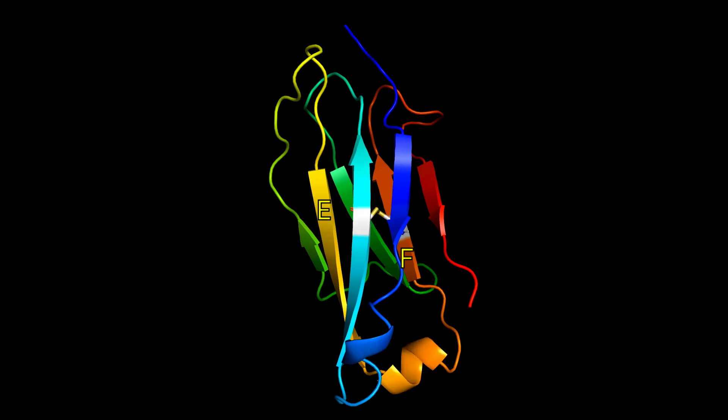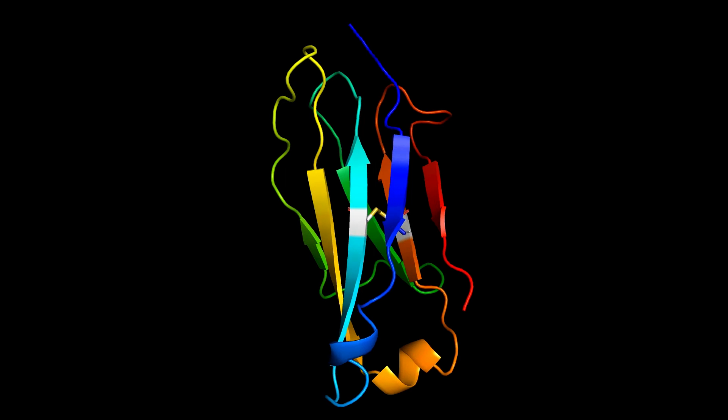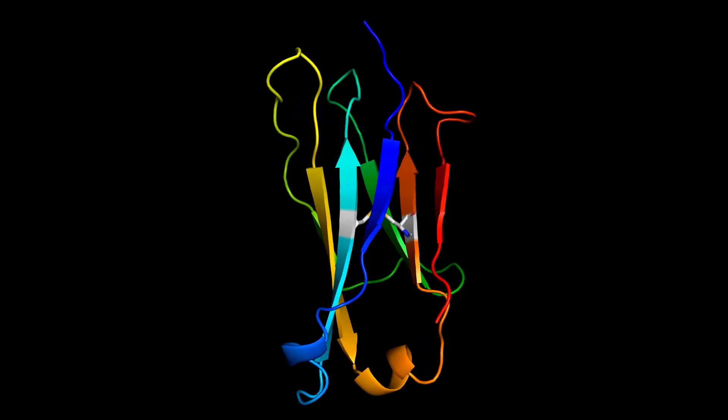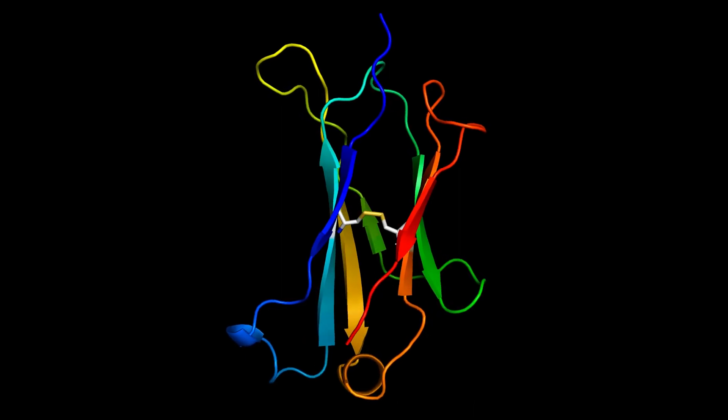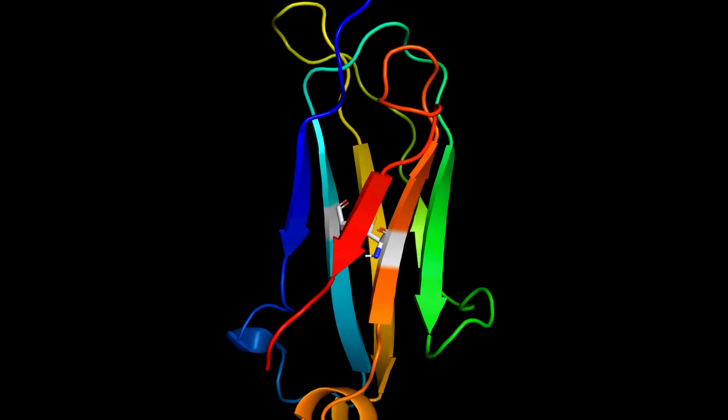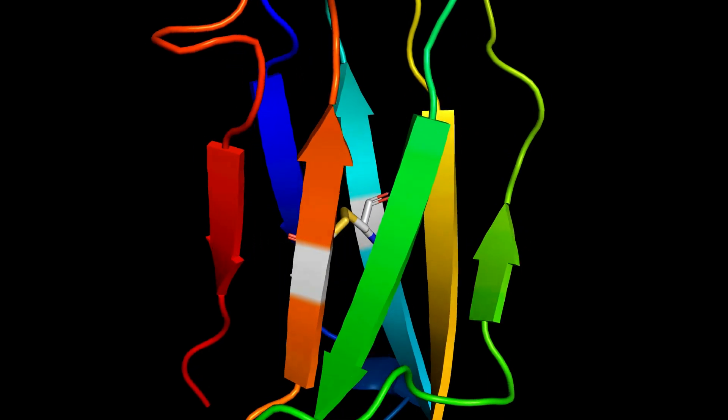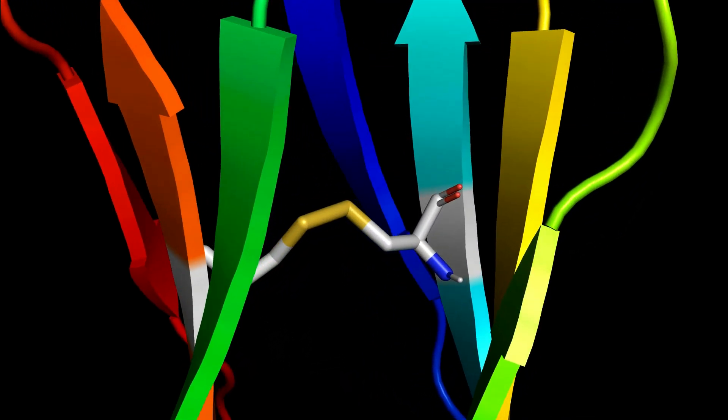We find the seventh strand, strand G, at the C-terminus. Finally, there's a disulfide bond covalently linking two cysteine residues in the B and F beta strands. This is the form of the immunoglobulin fold in every one of the constant domains.